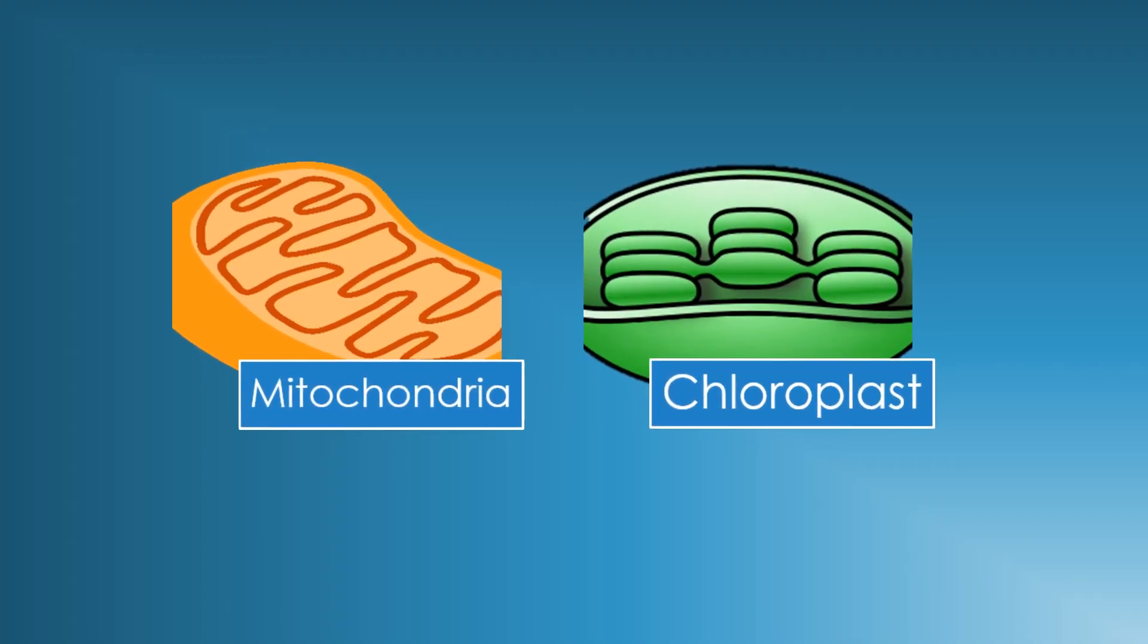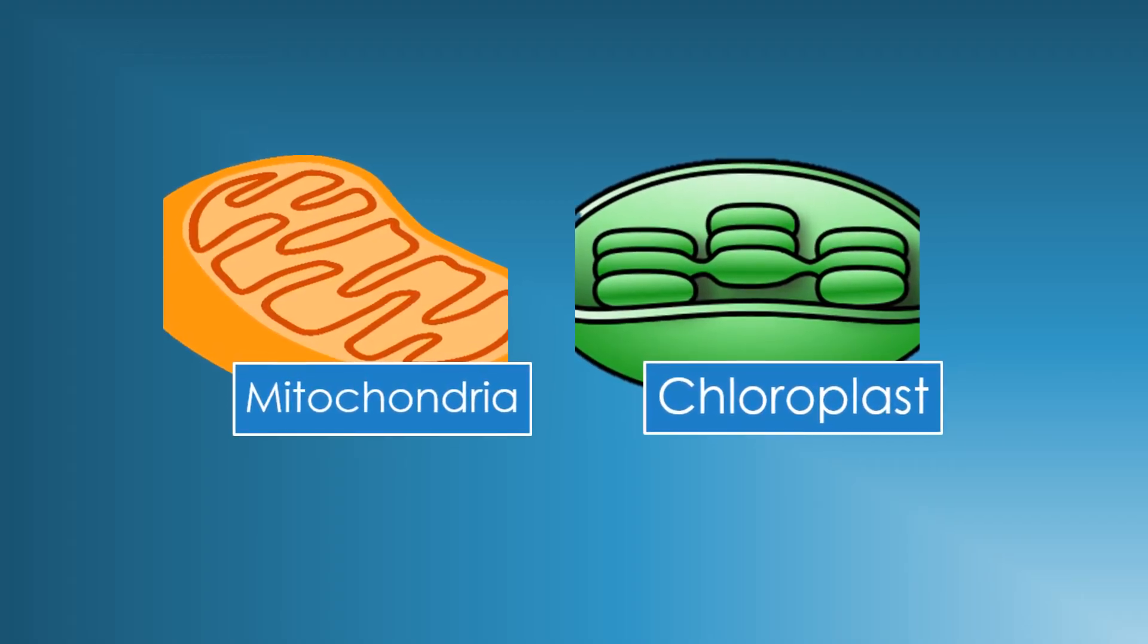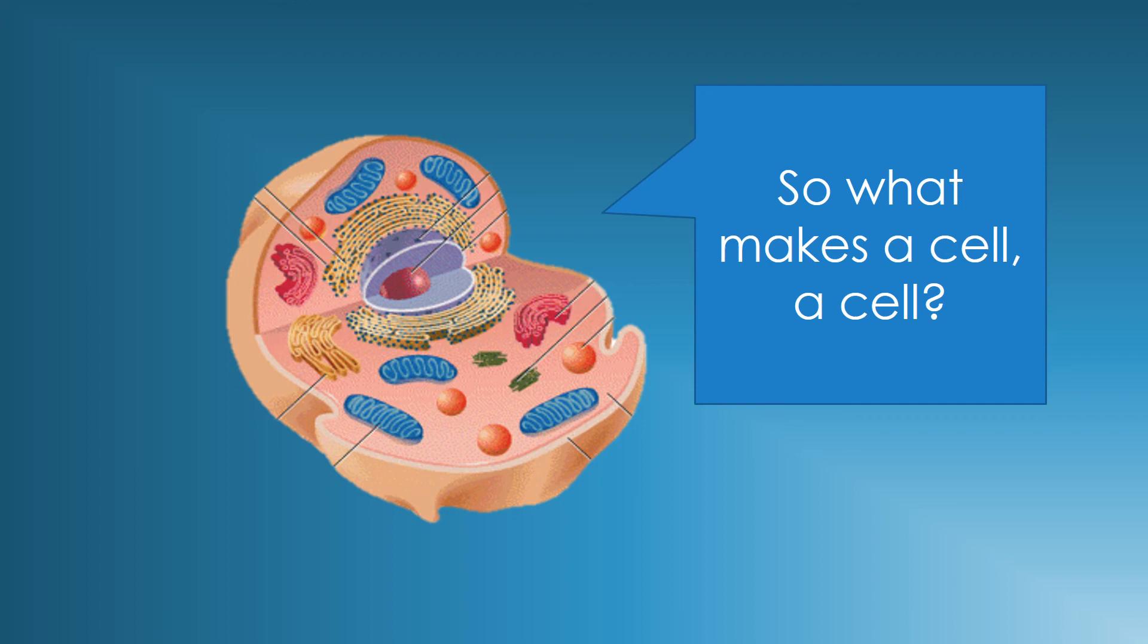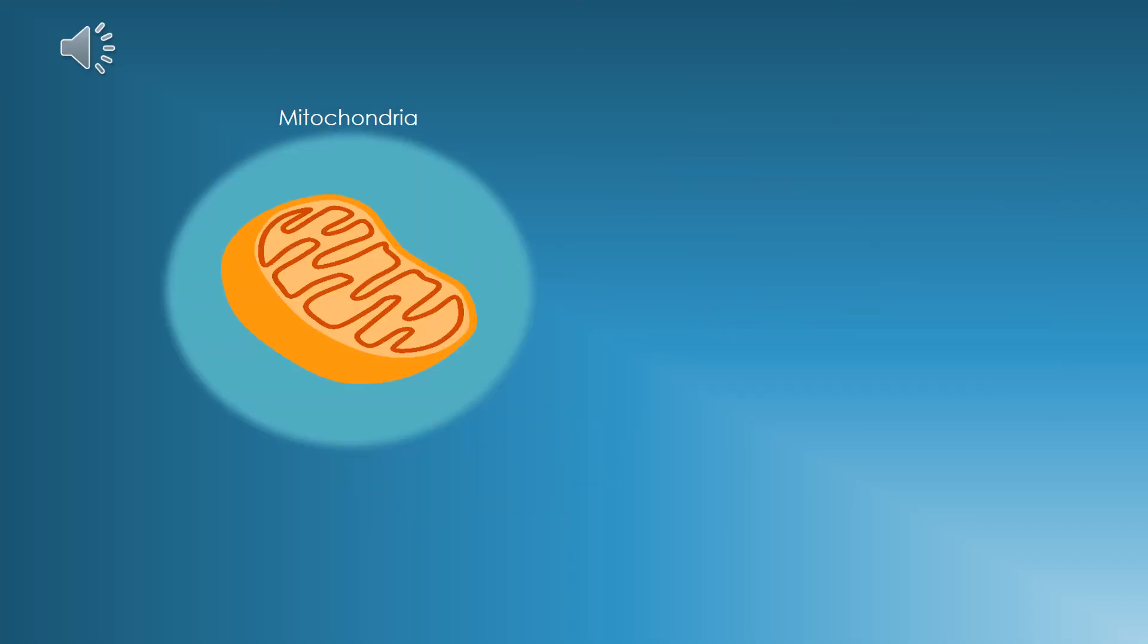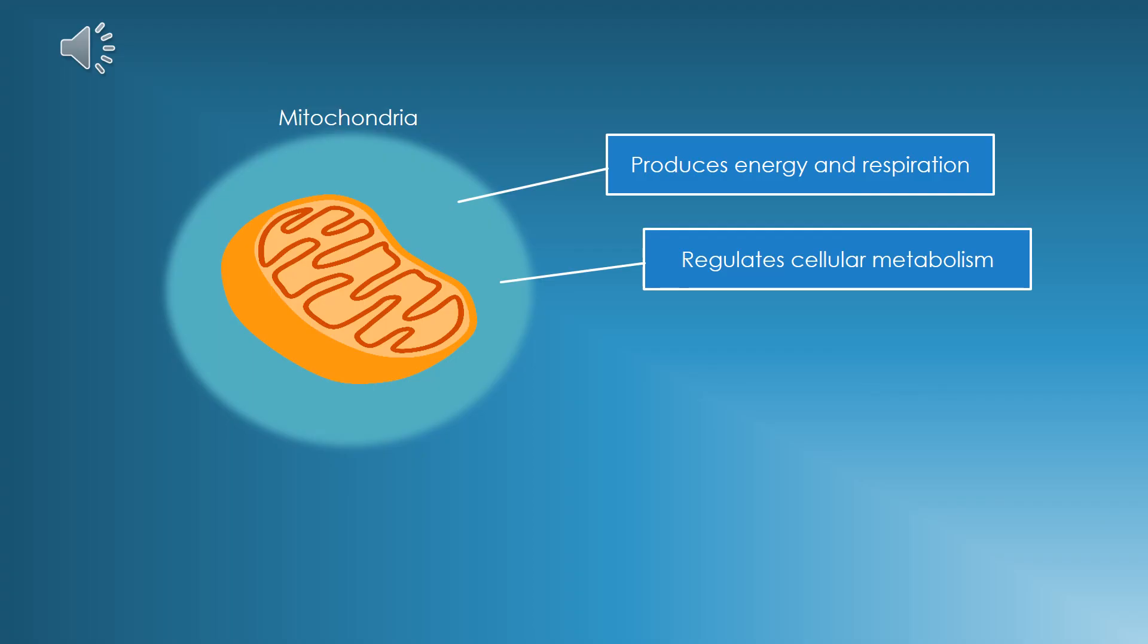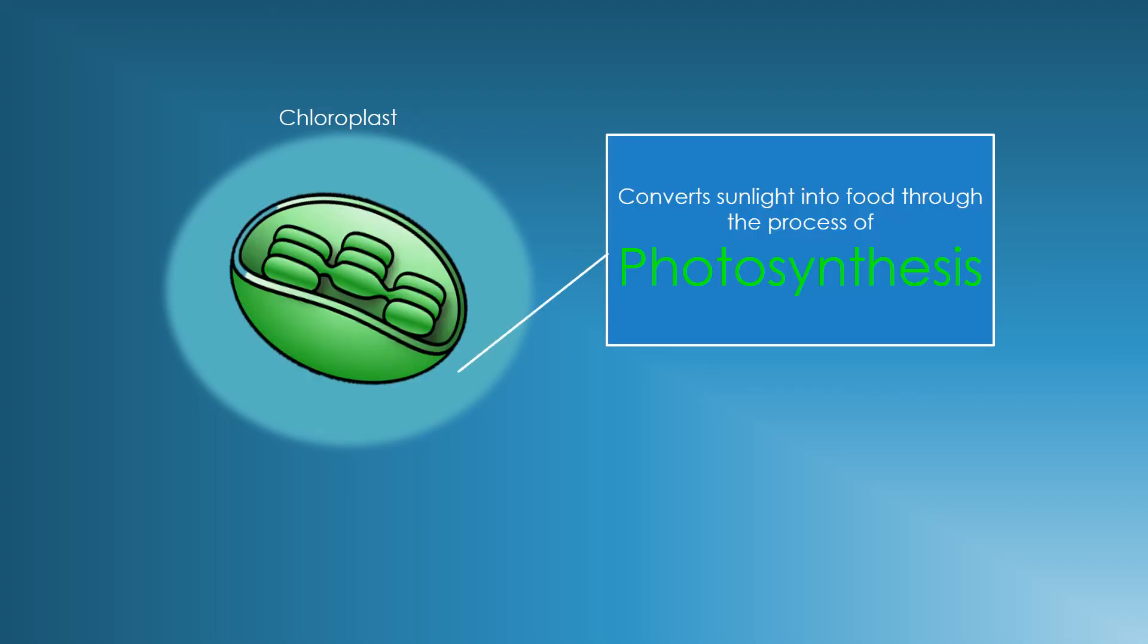Chloroplasts, only found in plant cells, convert sunlight into food. All cells must be able to produce energy. The mitochondria produces energy and respiration, regulates metabolism, and can reproduce itself.